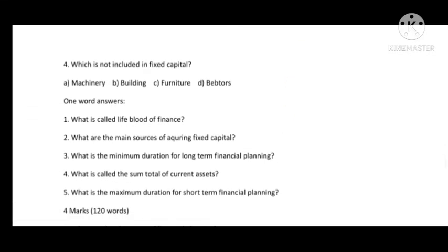Which is not included in fixed capital — the answer is D, debtors (D-E-B-T-O-R-S). One-word answers: What is called the lifeblood of business — the answer is finance. Note: the question in the material mistakenly says 'lifeblood of finance' but should be 'lifeblood of business.'